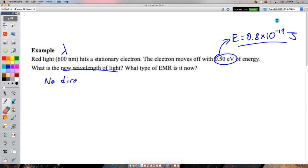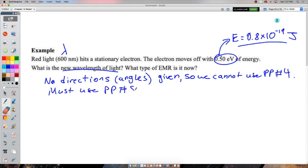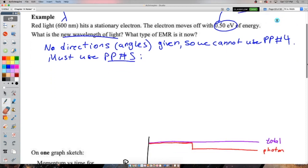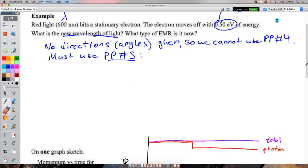So you can solve Compton scattering problems with the conservation of momentum and the conservation of energy in theory. But to solve it with momentum, what do you need? You need a direction. You need to know something about what direction it was scattered. That didn't happen here. They only gave us energy. Which, of course, direction really translates to angle. So we can't use physics principle 4. We're going to have to use physics principle number 5.